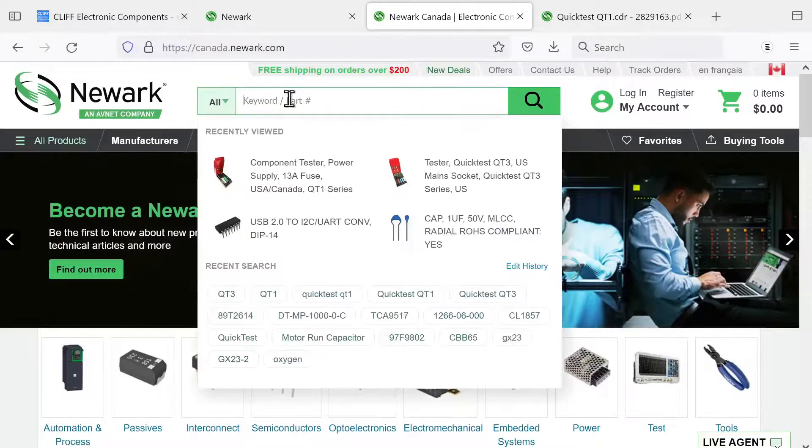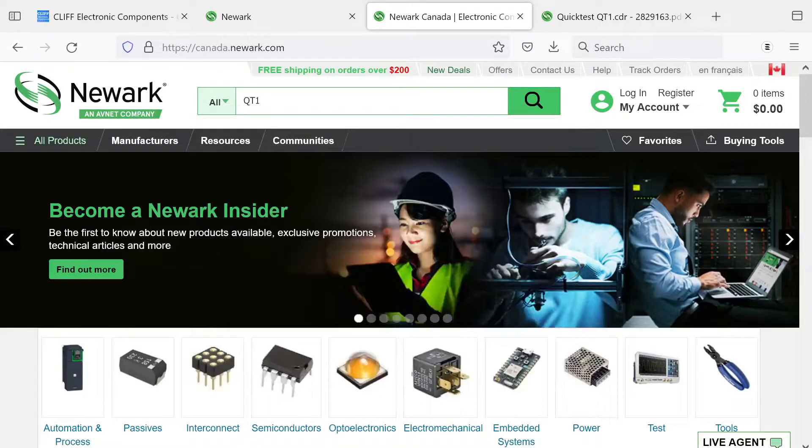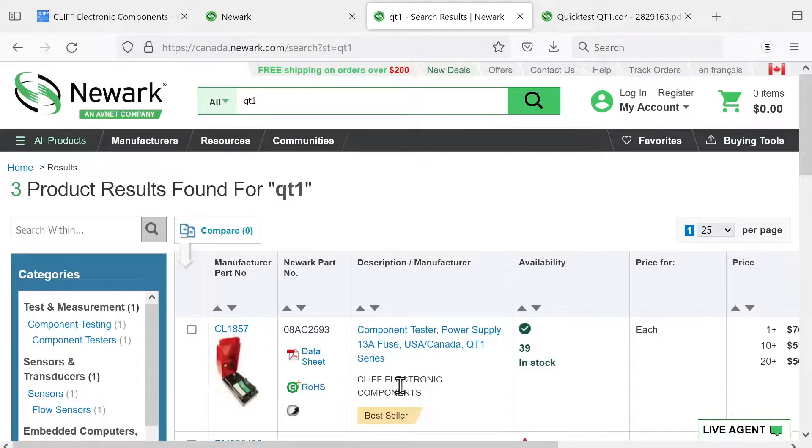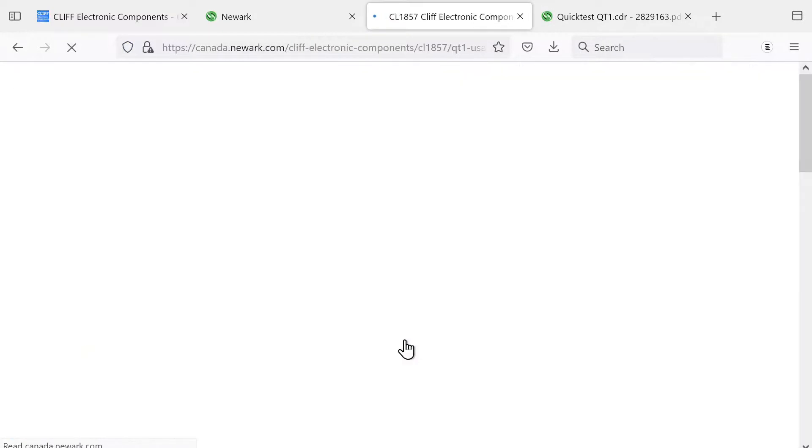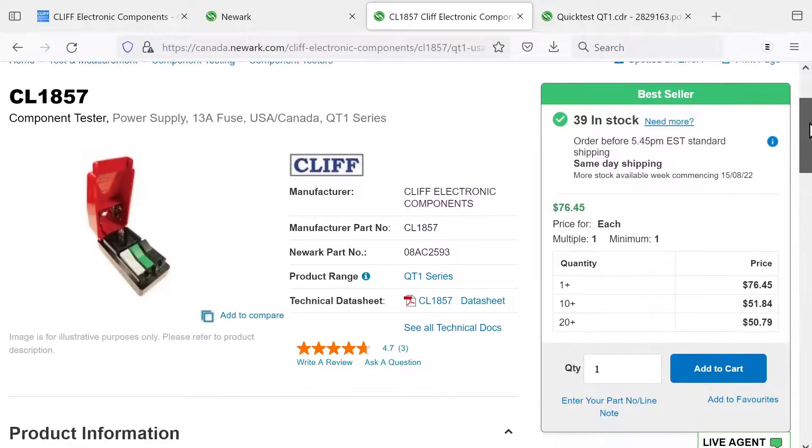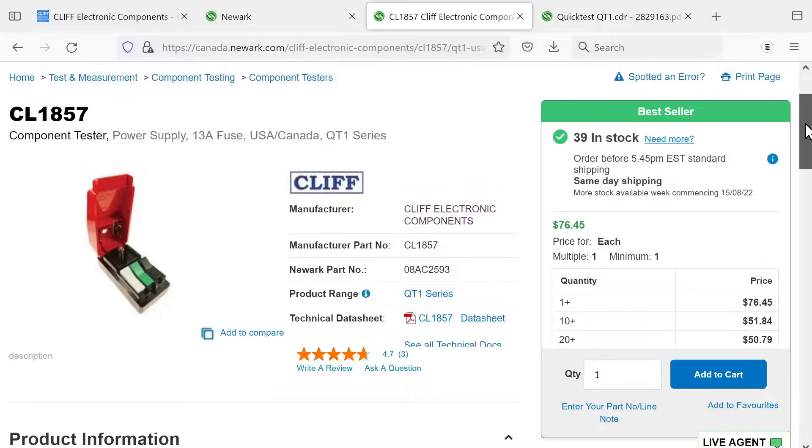If you're wondering where you can get this device, in North America you can get it from Newark. In the UK, you can get it from RS Components, which I believe is all owned by the same mother ship. And you can also occasionally see versions of this on eBay and Amazon. And the one thing you do have to look out for is that you're getting one with the correct color scheme for your country.